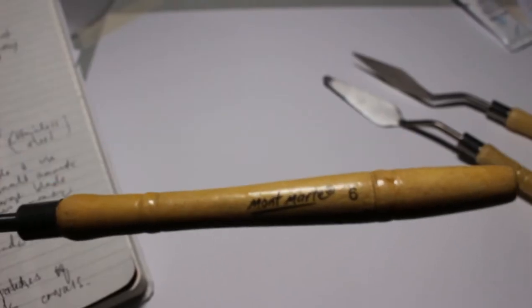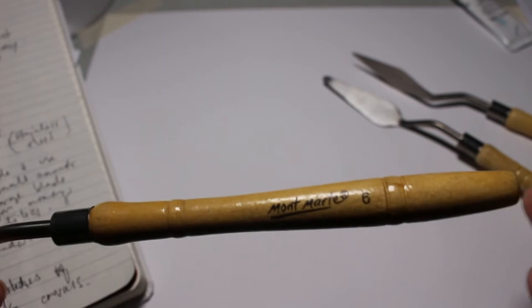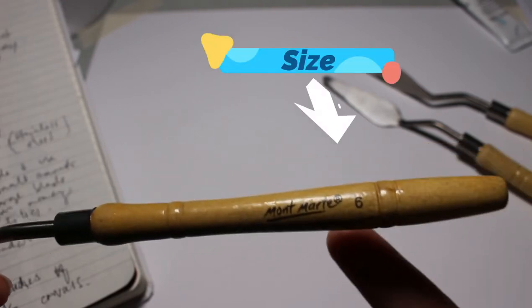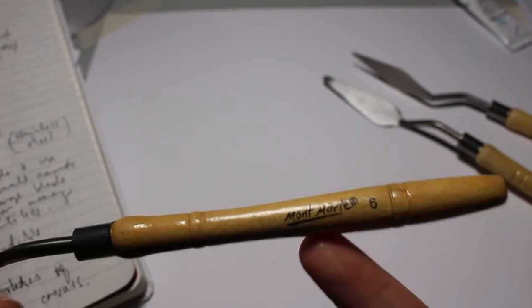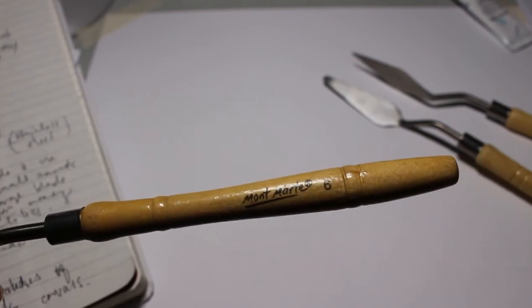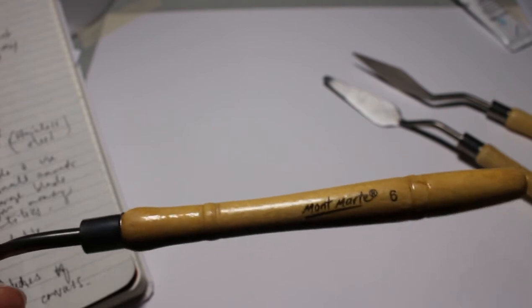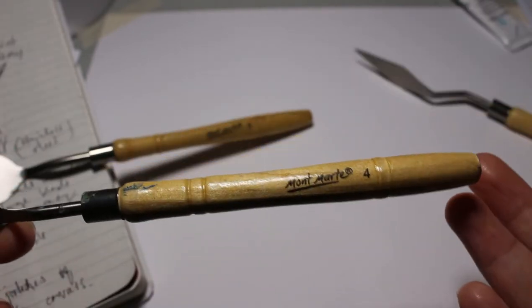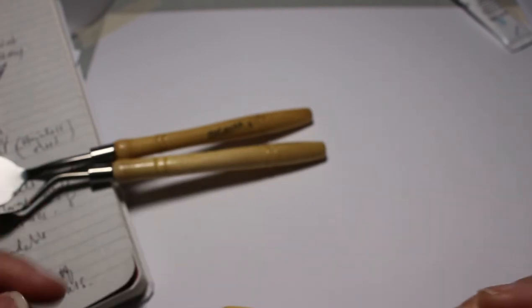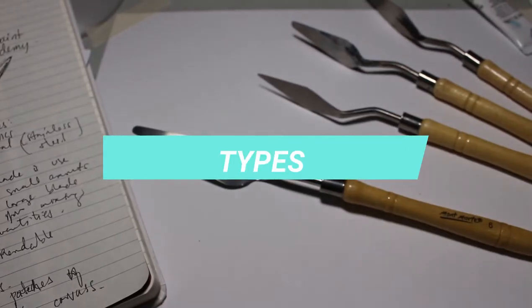A palette knife has different sizes. For this one, its size is number six. You can also see the brand here. The size of the palette knife depends on its manufacturer, just like brushes. We also have number four here, number one, and number three.